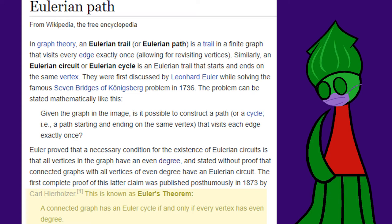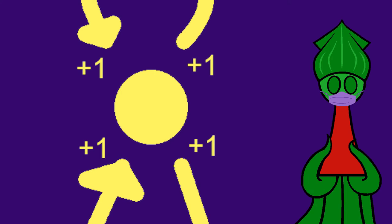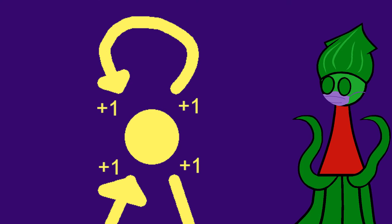This is called Euler's theorem because Euler is much more famous than Heierholzer. A vertex's degree is how many edges come out of it or lead into it. This loopy edge counts twice, both directions.